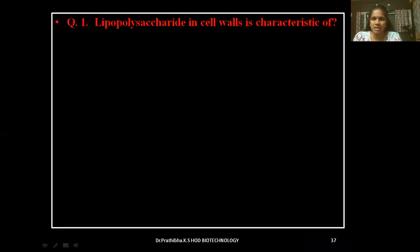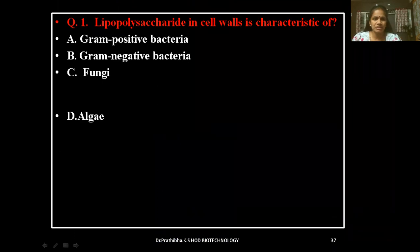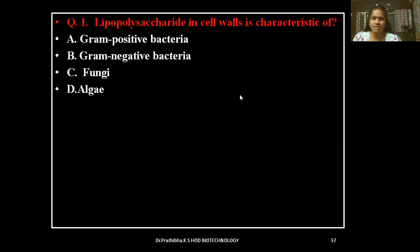Question 1: Lipopolysaccharide in cell walls is characteristic of — gram-positive bacteria, gram-negative bacteria, fungi, or algae? I am giving the answer at the end of the slide. You need to mark which is the right answer and keep it ready with you.